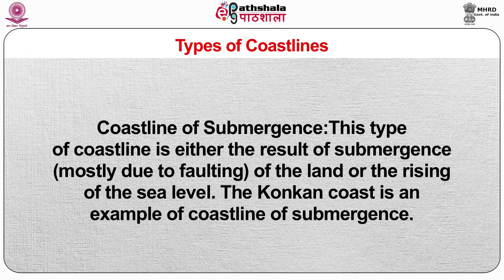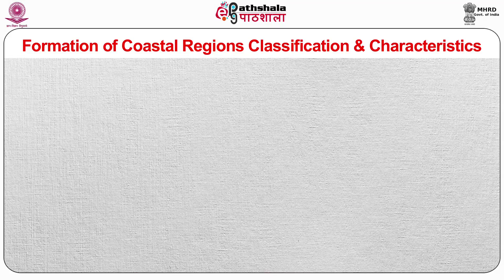A coastline of submergence is either the result of submergence — mostly due to faulting of the land — or the rising of the sea level. The Konkan coast is an example of a coastline of submergence. These are the formation, classification and characteristics of coastal regions.